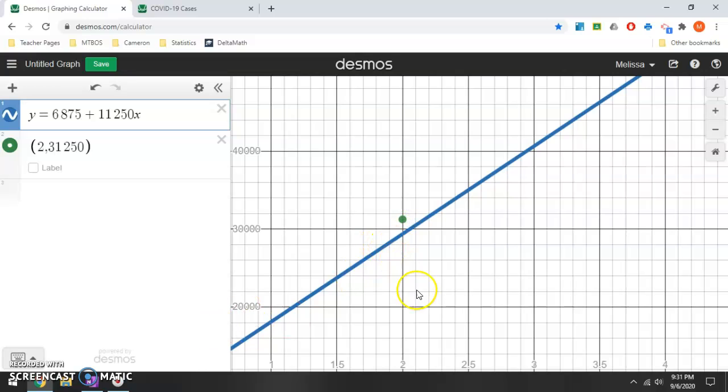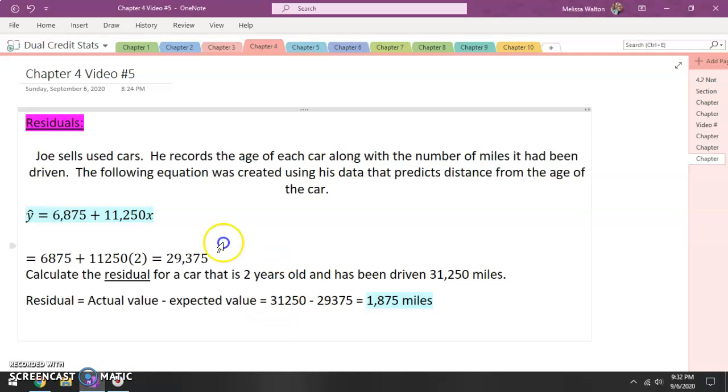Now, if this were to have a negative residual, well, let's think about what a negative residual would mean. It is possible to be negative. That means that the car has been driven less than it was expected. So real quick recap, we need two values, the actual value, the expected value. Actual value is what actually happened. Expected is using our formula. And then finally, when you subtract those, you either get a positive value, meaning it's been driven more than expected, or a negative value, meaning that it has been driven less than expected. So real quick recap, we'll see you next time.